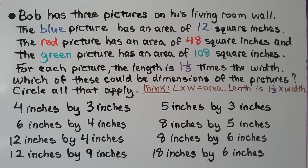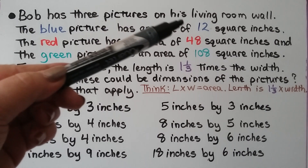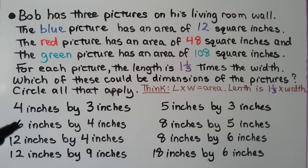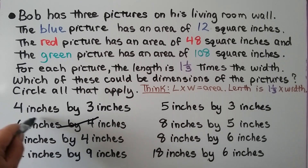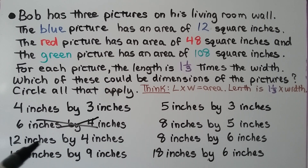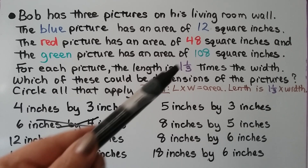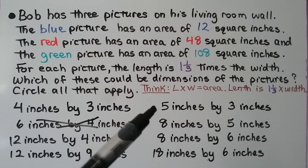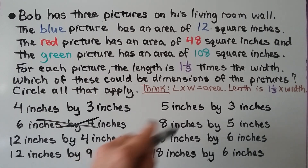We think: length times width is the area, so our area has to be twelve, forty-eight, or one-hundred-eight. Looking at four by three: that's a maybe. Six by four is twenty-four — doesn't fit. Twelve by four is forty-eight — might be that one. Twelve by nine: twelve times nine is one-hundred-eight — could fit. Five by three is fifteen — doesn't fit any. Eight by five is forty — doesn't fit either.